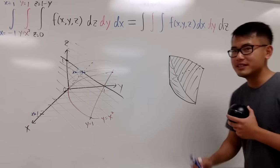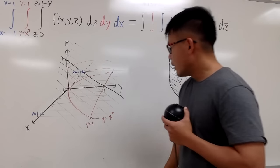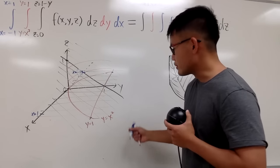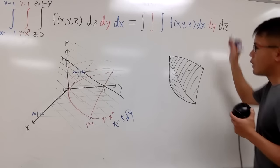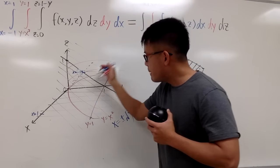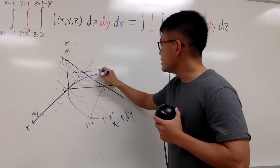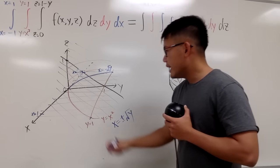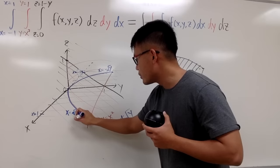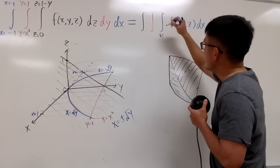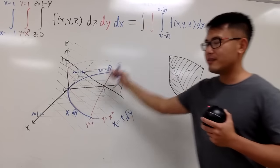Now here is the work. We are focusing on x first, going from x to y, looking at the base. From y equals x squared, we can square root both sides: x equals plus or minus square root of y. Going from left to right, the back portion of the parabola has equation x equals negative square root of y, and the front portion is x equals square root of y. So x goes from negative square root of y to square root of y.